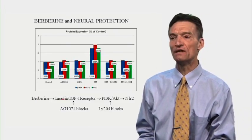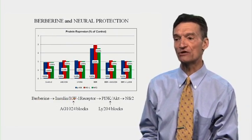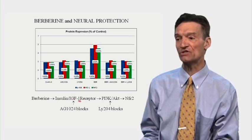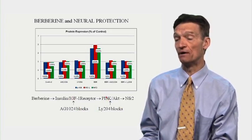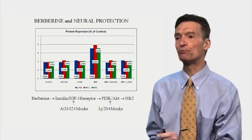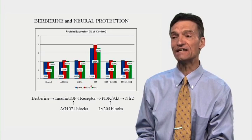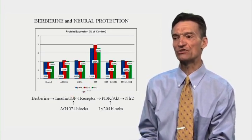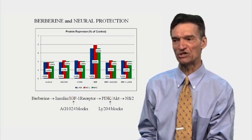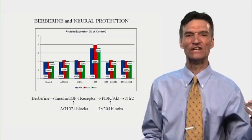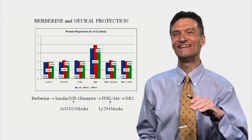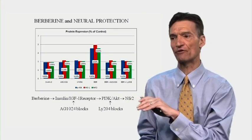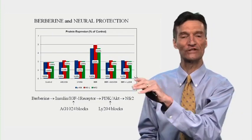The pathway is berberine → IGF receptor → PI3K-AKT → Nrf2. AG1024 blocks the IGF-1 receptor; LY294002 blocks PI3K-AKT. If we look at protein expression of AKT, heme oxygenase-1, and Nrf2 — we increase these with berberine. But if we block the IGF-1 receptor or block PI3K, we don't achieve that goal. This insulin signaling pathway is also our detox, defense, and oxidative stress pathway, and it needs to be intact for berberine to improve insulin sensitivity and to translocate Nrf2.